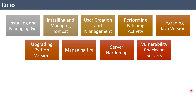In this lesson we are going to learn about roles. Before understanding roles, let's understand the problem statement. Let's say we are a system administrator responsible for writing Ansible playbooks for managing git, managing tomcat, user creation and management, performing patching activity, software upgrades like Java and Python, managing a Jira instance, doing server hardening, and performing vulnerability checks on the servers.